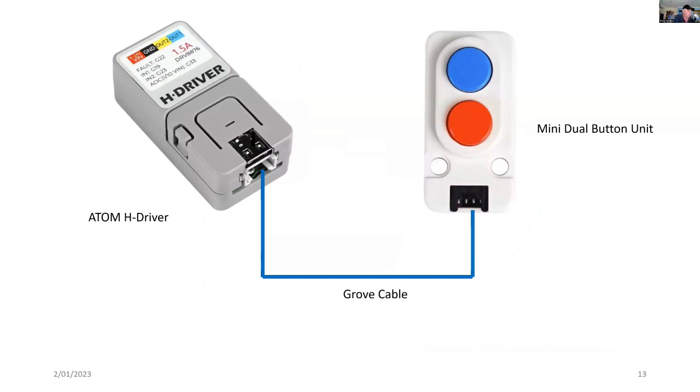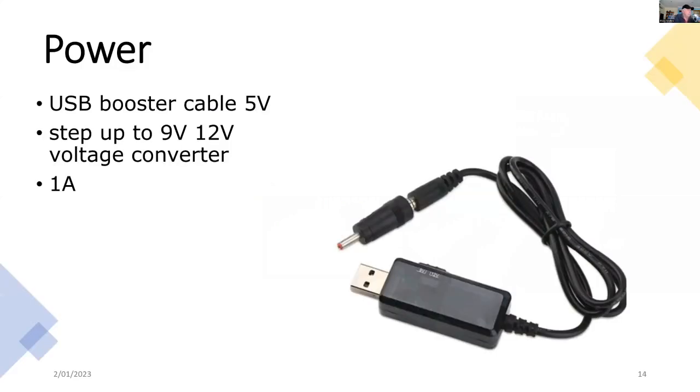I'm also going to add a little bit more functionality. I've got a button on the H driver, which is button A, but I'm going to add the M5 stack mini dual button unit, and that goes into the Grove socket on the Atom H driver using a Grove cable. And instead of using batteries, I'm going to use the USB booster cable, and it provides 9 to 12 volts, and I can get 1 amp out of that. So, it's quite suitable for this application.